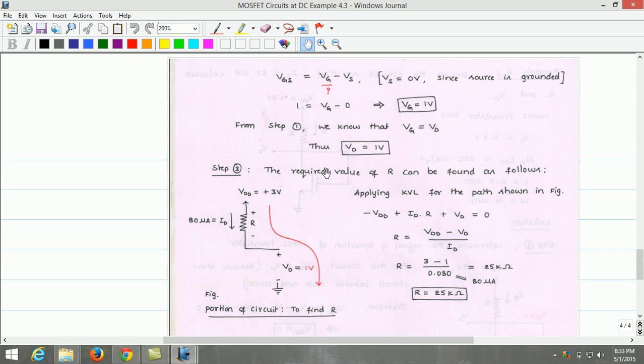Once we estimate drain voltage, we can estimate the resistor value using the portion of the circuit shown here. The required value of R can be found as follows. If we apply KVL for the loop shown here, the resulting equation is minus Vdd, Id times R, that's a drop across the resistor R, plus Vd equals 0. On rearranging the equation, we obtain R is equal to Vdd minus Vd divided by Id. The values of Vdd, Vd and Id can be substituted and the R value can be estimated. The R value on calculating is found to be 25 kilo ohm.